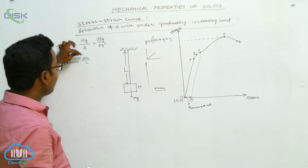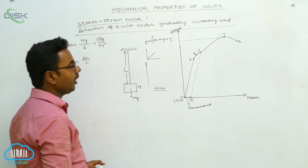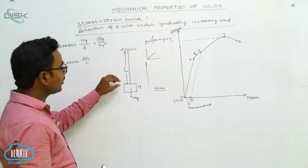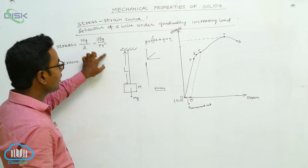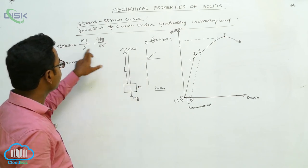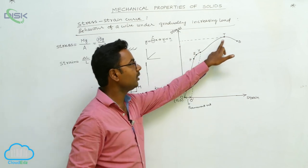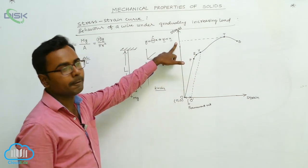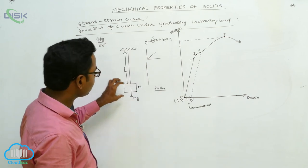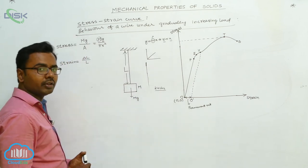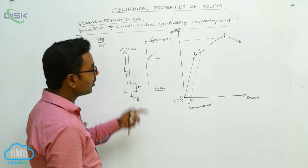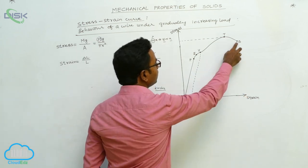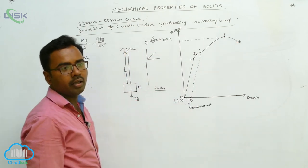Permanent set equals permanent increase in length divided by original length. Beyond point Y, even without an increase in load, the wire becomes thin and thin — the radius decreases and stress increases up to point T, called the tensile point, where the stress is maximum and is called tensile stress. Thereafter the wire cannot withstand the load, kinks are produced, and the wire breaks at point B, called the breaking point.